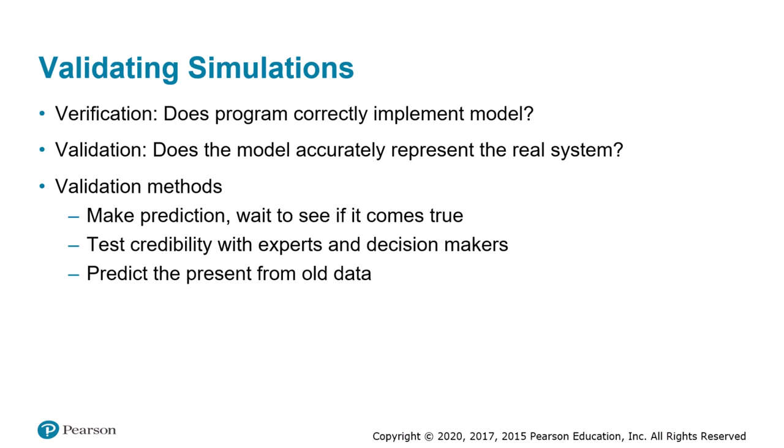Validating a model that predicts the future can introduce new difficulties. If we are trying to predict tomorrow's weather, it is reasonable to validate the model by waiting until tomorrow to see how well the prediction held up. However, if you are using a global warming model to estimate what the climate will be like 50 years from now, you cannot validate this model by comparing its prediction with reality because you cannot afford to wait 50 years. What you can do instead is a form of indirect validation — you can validate the model by using it to predict the present.